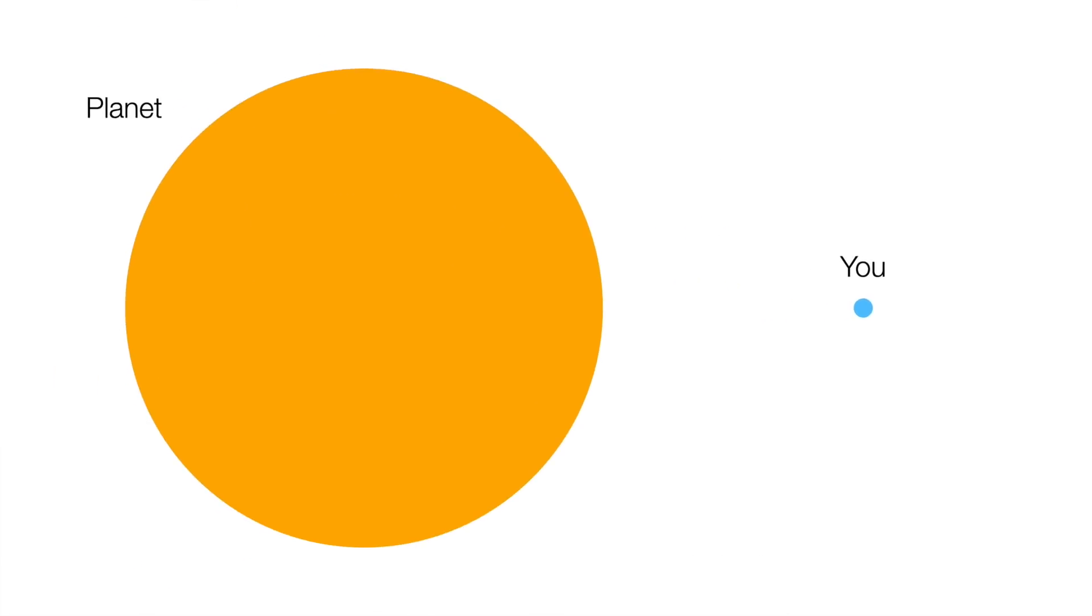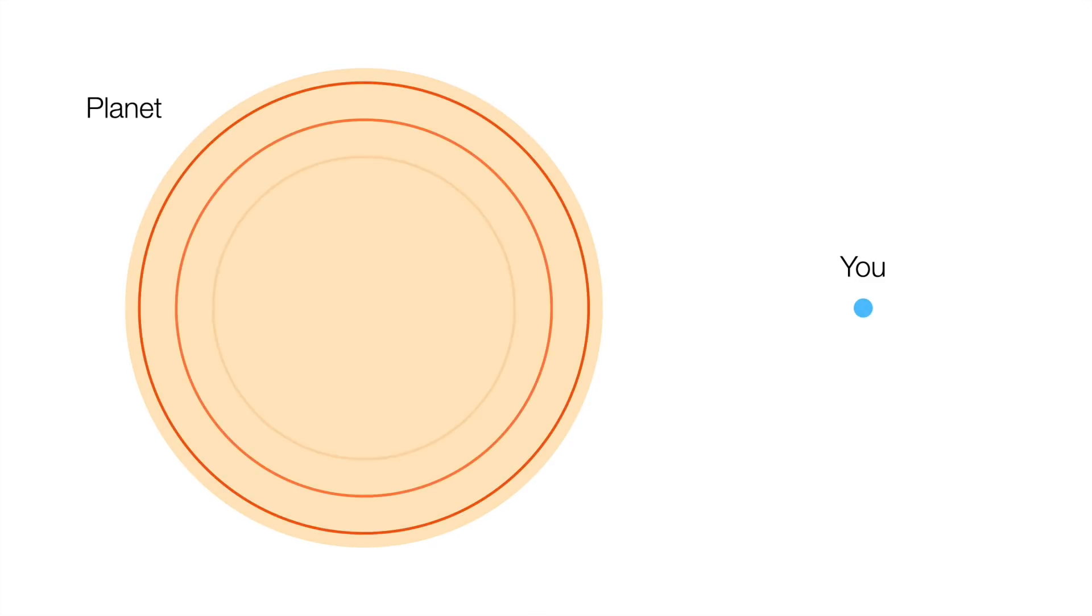Imagine you're floating out in space, really far away from everything else. Except there's a big planet nearby. It's a sphere, as planets tend to be, and let's assume it's spherically symmetric throughout. That means that the density at a given radius is the same, but different radii might have different densities.